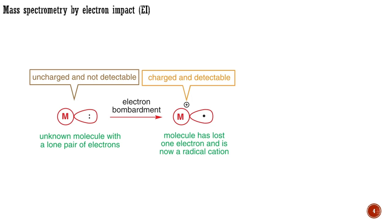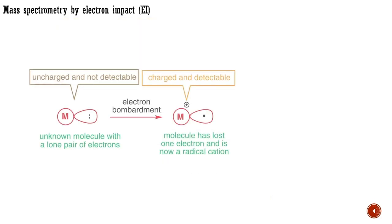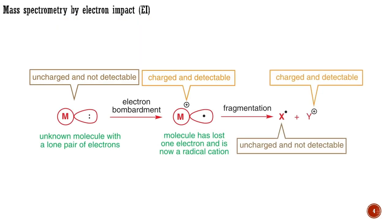Radical cations and radical anions are simply species that are both charged and have an unpaired electron. Being charged, radical cations are accelerated by an electric field and focused onto the detector, which detects the mass of the ion by how far its path has been deflected. It only takes about 20 microseconds for the radical cations to reach the detector, but sometimes they fragment before they get there, in which case other ions will also be detected. These fragments will always have a lower mass than the parent molecular ion, so in a typical mass spectrum we are most interested in the heaviest ion we can see.